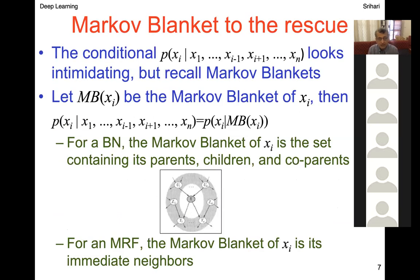The conditional p(x_i | x_1...x_n, not i) looks intimidating, but we use the Markov blanket idea — ignoring all variables except those in the neighborhood of x_i. This conditional x_i given all others is the same as x_i given the Markov blanket of x_i, which is all variables it is connected to.